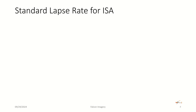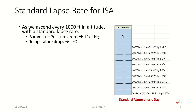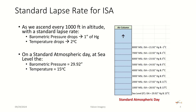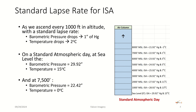Another thing we need to keep in mind is the standard lapse rate for the international standard atmosphere. As we ascend in altitude, every 1,000 feet we go up, the barometric pressure will drop one inch of mercury, and the temperature will drop two degrees Celsius. On a standard atmospheric day at sea level, the barometric pressure is 29.92 inches and temperature is 15 degrees Celsius, as shown in this blue column of air on the right. You'll see at sea level the pressure is 29.92 inches and 15 degrees C, and every 1,000 feet we go up, we lose that inch of mercury and the temperature drops two degrees Celsius with a standard lapse rate. You'll notice also at 7,500 feet the barometric pressure is 22.42 inches of mercury and the temperature is zero degrees Celsius. So on a standard atmospheric day, you get up around 7,500 feet, you're at freezing altitude and need to start thinking about icing, usually before you even get to that 7,500 feet.